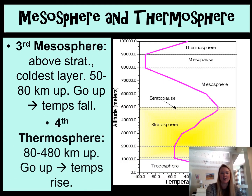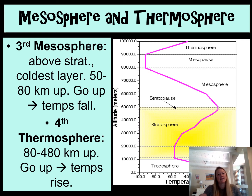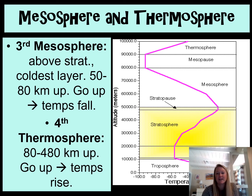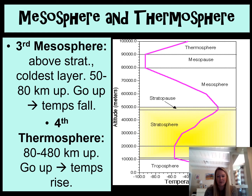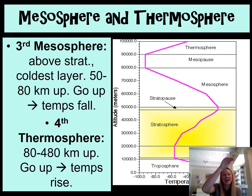The third and fourth layers are the mesosphere and the thermosphere. The mesosphere goes from about 50 to 80 kilometers up, and as you go up, temperatures fall again — there aren't many particles to absorb sunlight, so it's a very cold layer. The thermosphere goes from about 80 to 480 kilometers and temperatures get warmer again because it's closest to the sun. I would definitely memorize this pattern: troposphere goes warm to cold, stratosphere cold to warm, mesosphere warm to cold, thermosphere cold to warm.